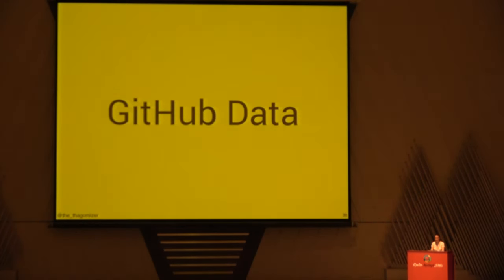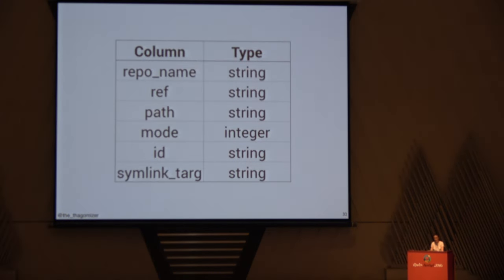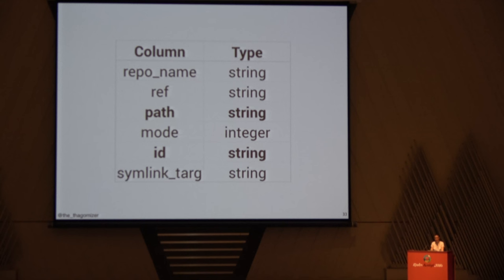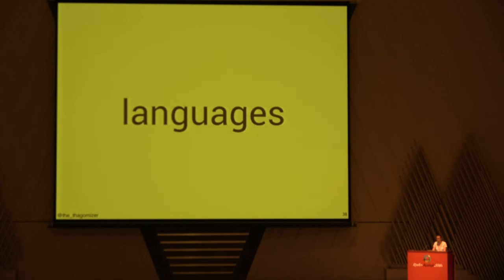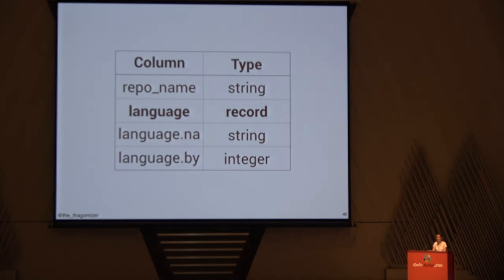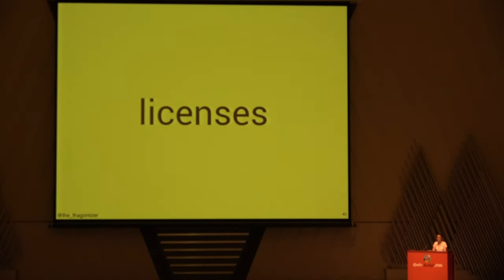The GitHub data has a couple of tables I'm going to use. The first is files, which contains all of the files in all public repositories on GitHub — a very large set of data. I'm mostly interested in the path and the ID for joins. I only care about files like Gemfile, Gemfile.lock, Rakefile, and .rb files. The contents table contains the raw content of all those files — the entirety of a Gemfile, a Rakefile, and all .rb files in public repos. Commits were interesting but not particularly relevant. Languages tracks repo language, which is a record with nested fields. The licenses table wasn't particularly interesting either.